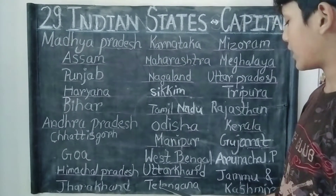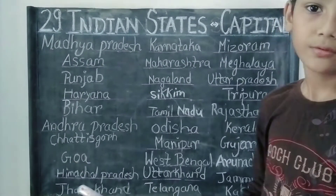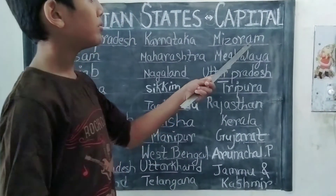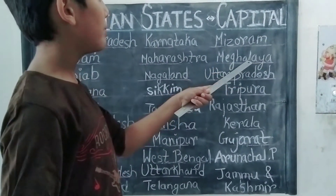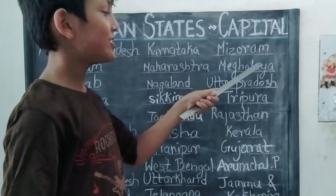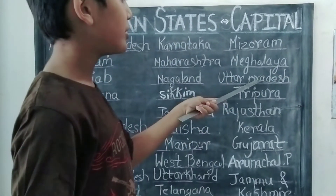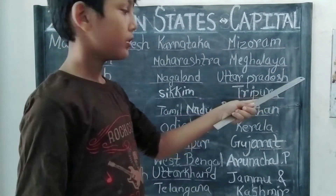The capital of Tulungana is Hyderabad. The capital of Mijerum is Ajwaal. The capital of Megala is Shilong. The capital of Uttarapradesh is Plaknow.